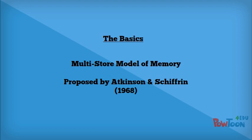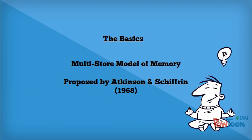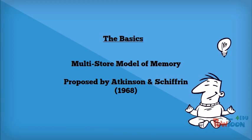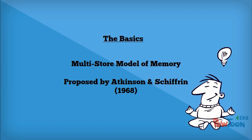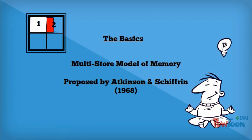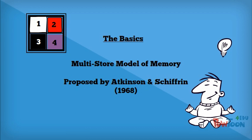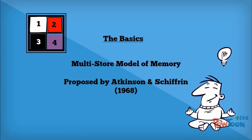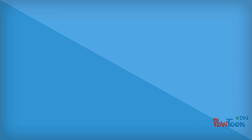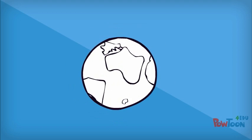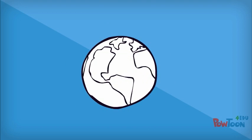The multi-store model was proposed by Atkinson and Shiffrin in 1968. They spent a long time trying to explain how memory worked, and they needed a model to show the rather compartmentalised view of memory they had been developing. This theory became the most well-known and one of the most prominent explanations for memory in the world.